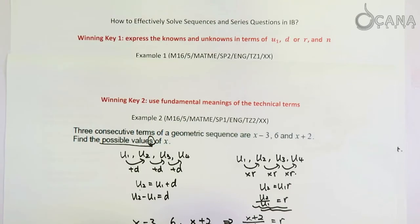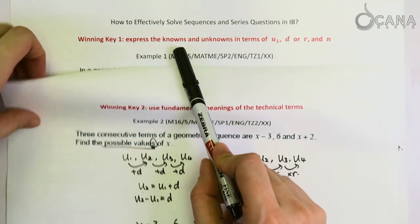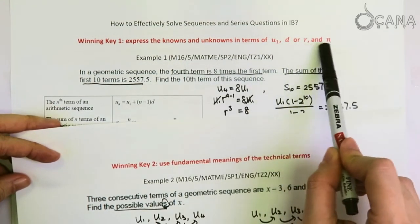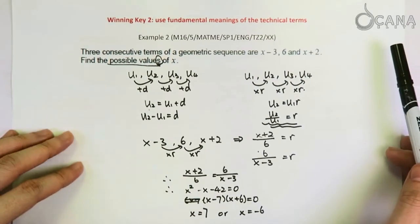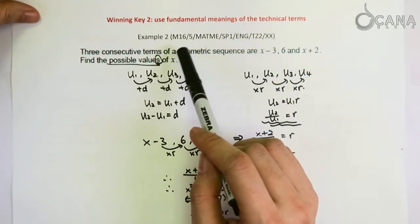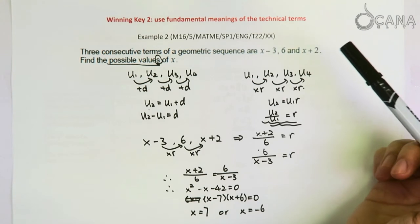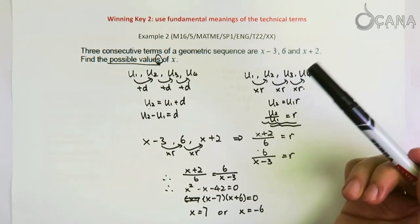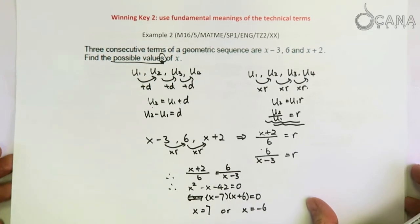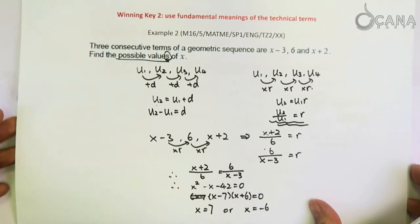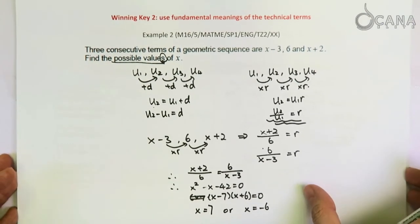Let's recap the two points again. The first point is to express the knowns and unknowns in terms of these three quantities. And then the second point is to be able to use some fundamental meanings of the technical terms that we usually see.